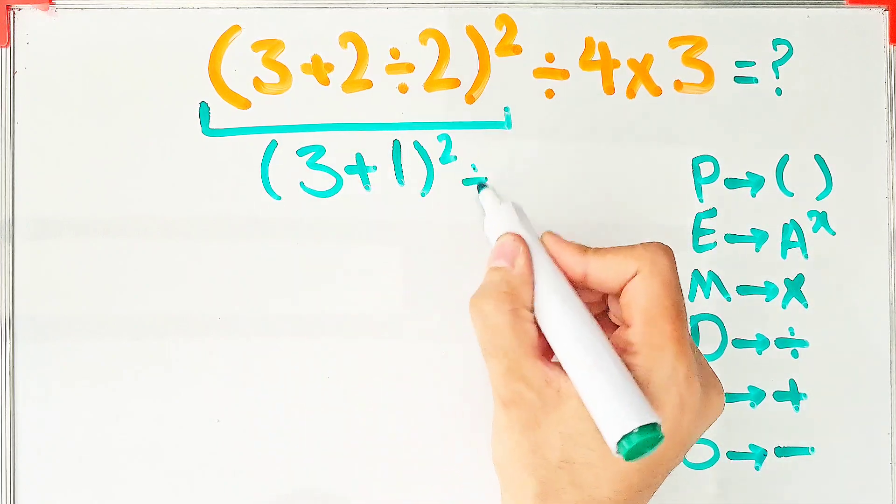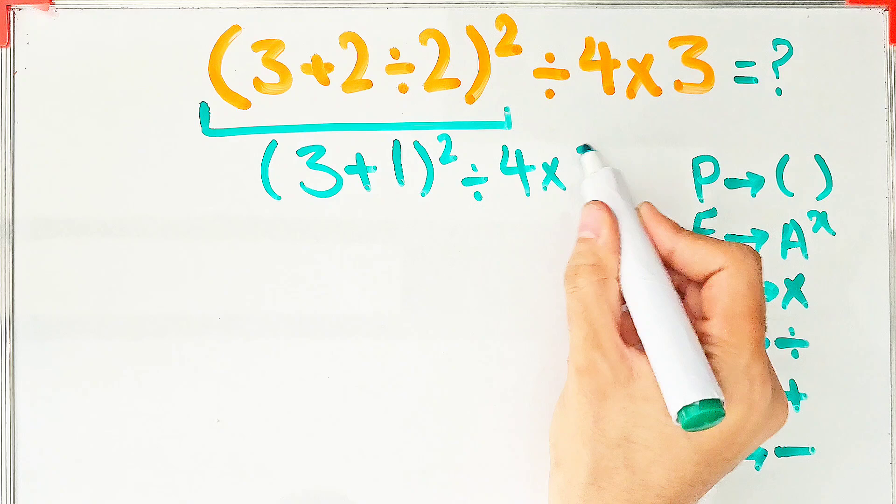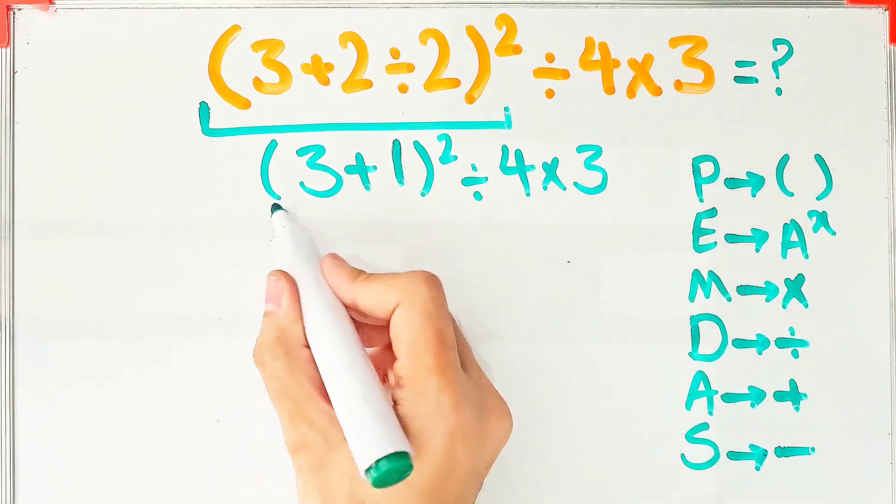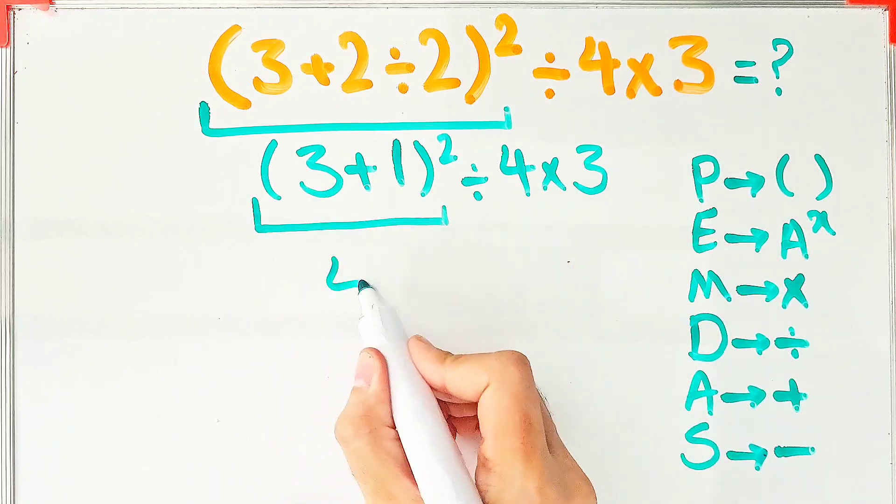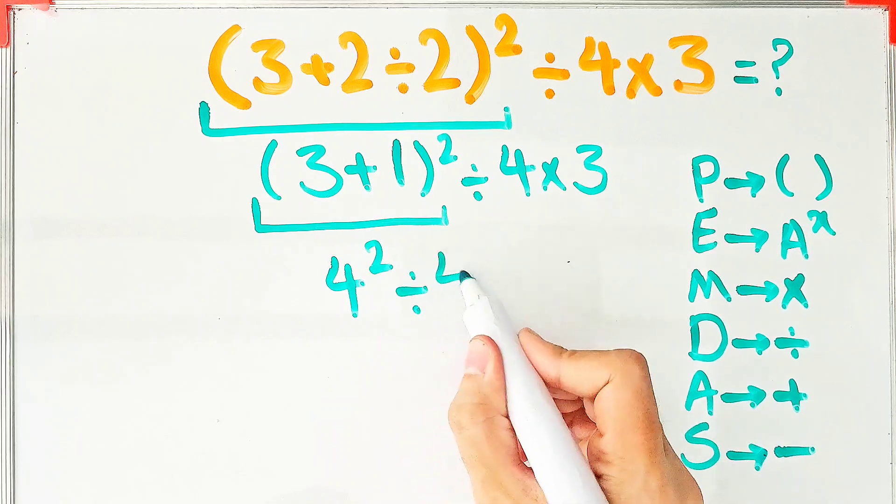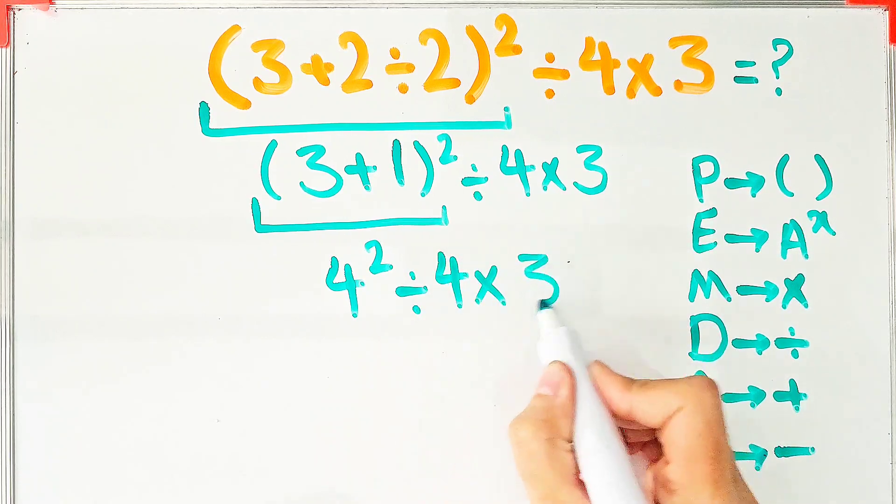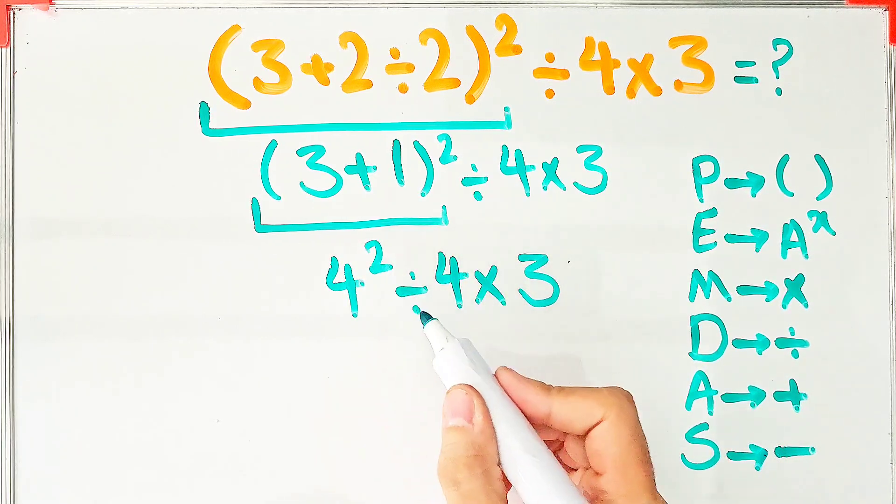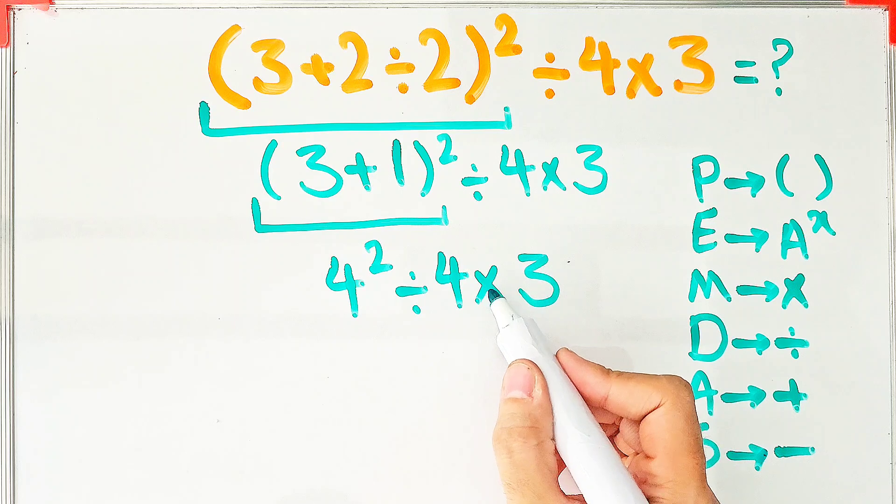4 to the power of 2 divided by 4 then times 3. We have exponent, division, and multiplication in this question. First we simplify the exponent: 4 to the power of 2 equals 16.